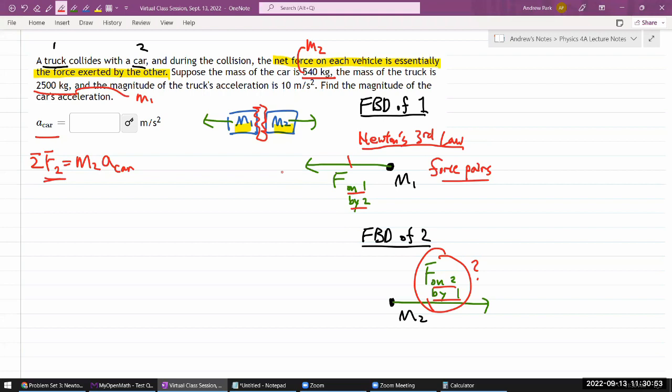The mass of the truck is 2,500 kilograms, and the magnitude of the truck's acceleration is 10 meters per second squared. The question has given me enough information to figure this out because it's giving me mass and acceleration of the truck, which will give me the net force on the truck. So I can say this is equal to M1 times A1. This is where Newton's third law comes in.